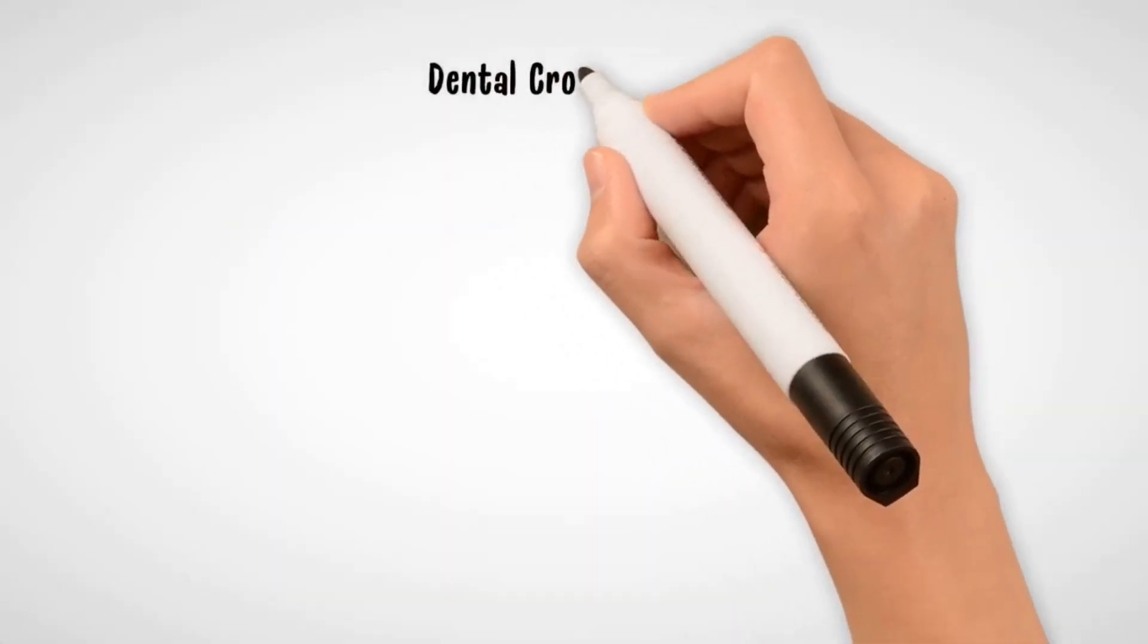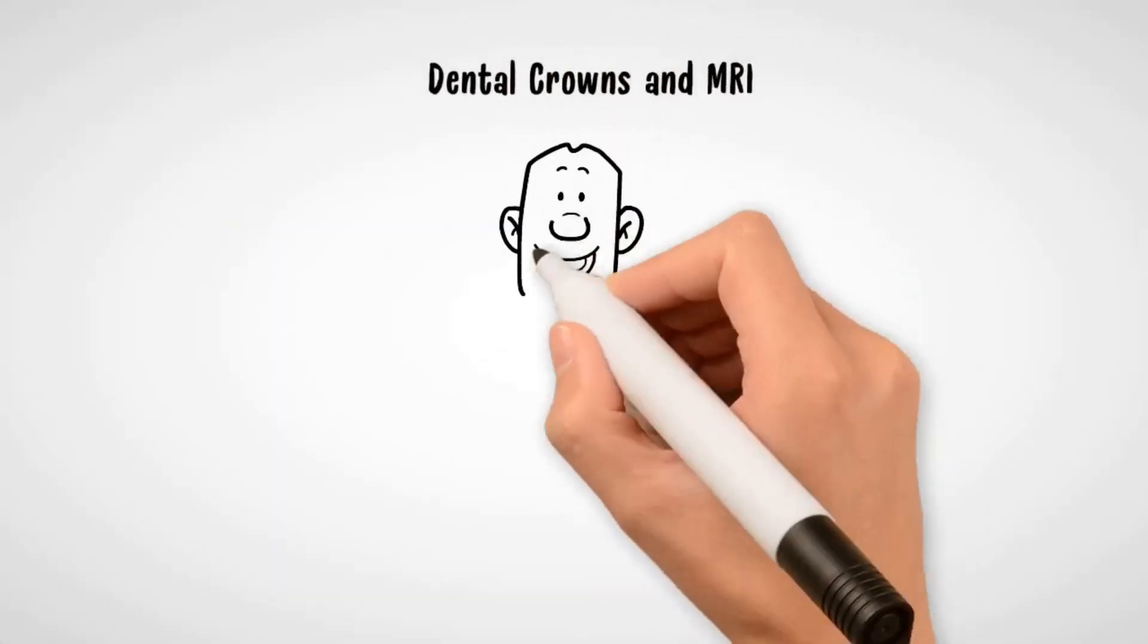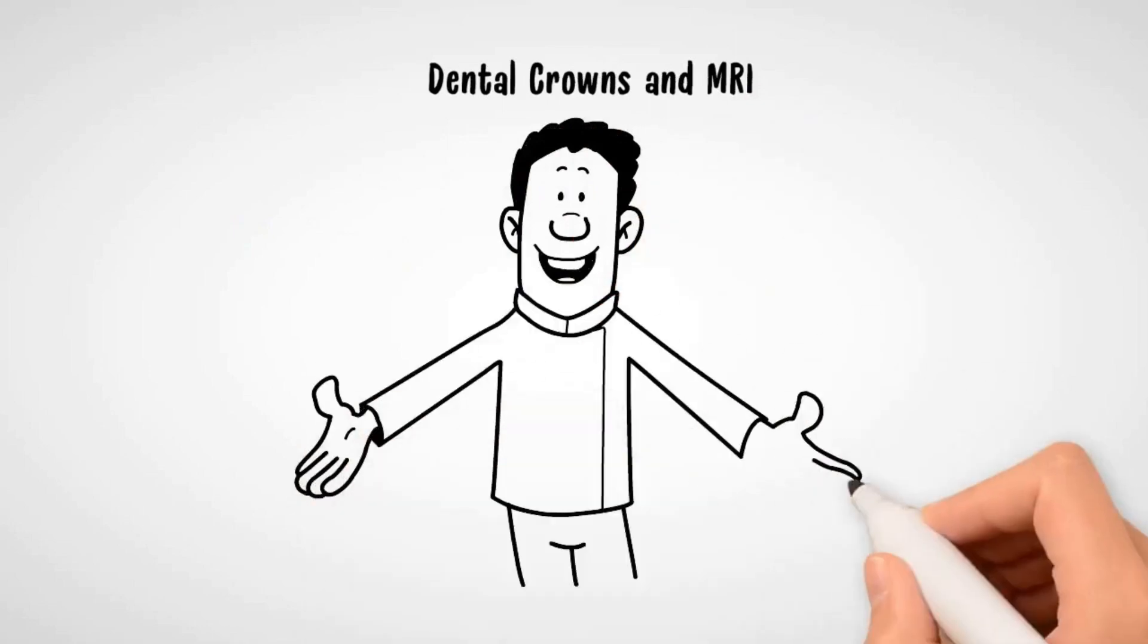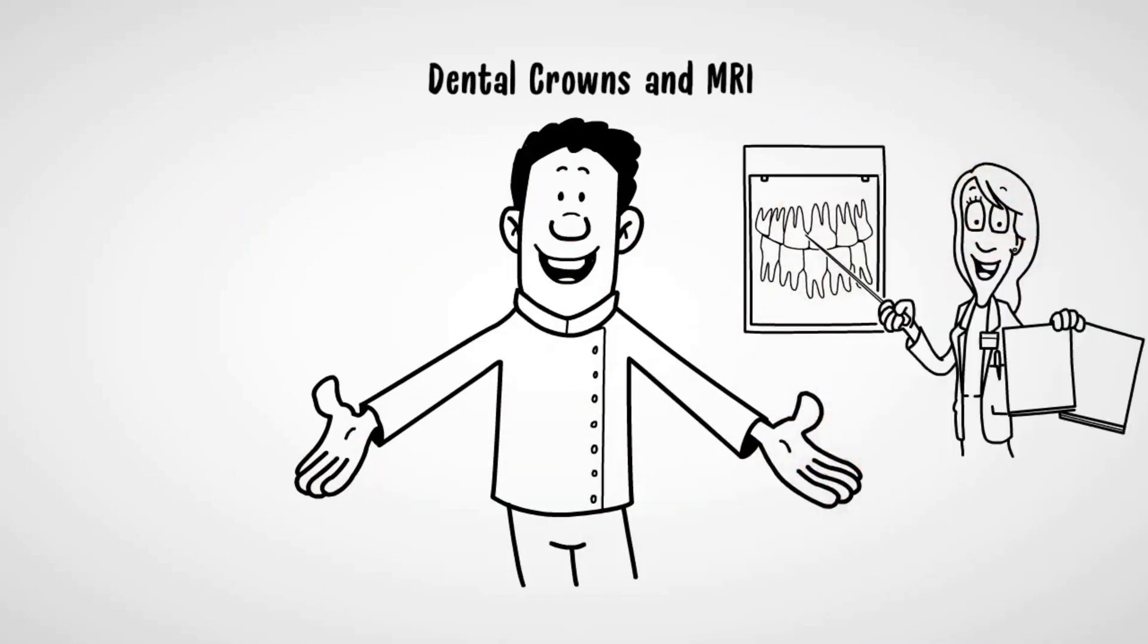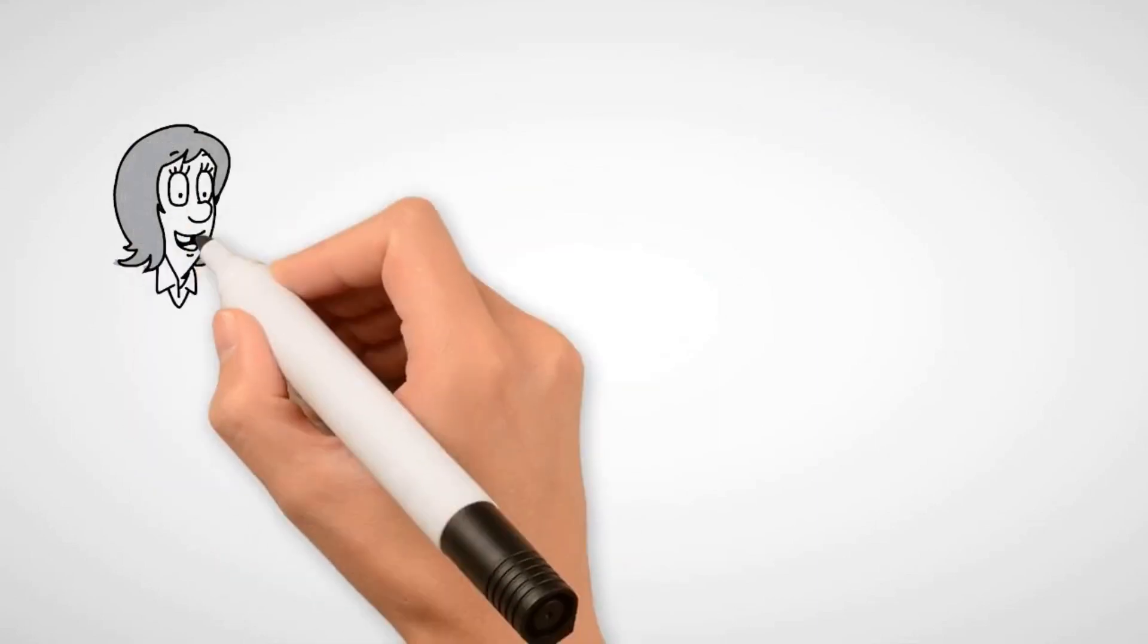When tooth decay can't be addressed with fillings, covering teeth with dental crowns is often the next step. Patients who choose metal crowns sometimes have concerns later on if they need to have an MRI. MRI uses a powerful magnet